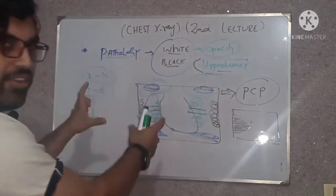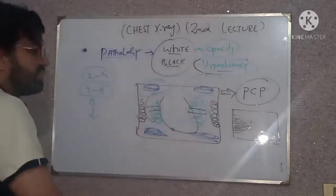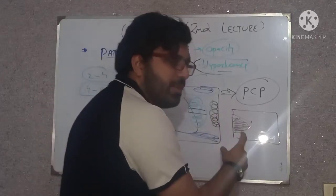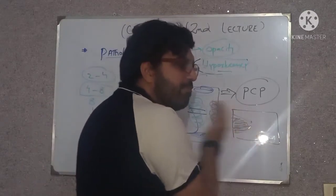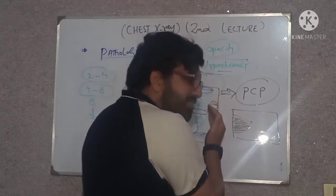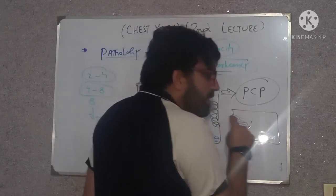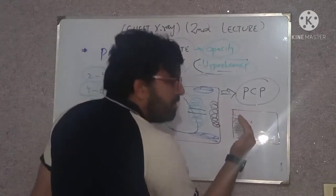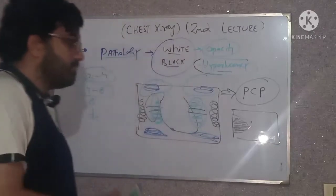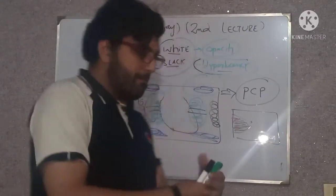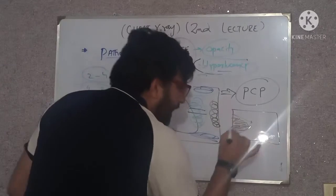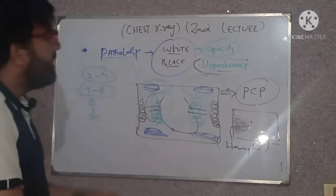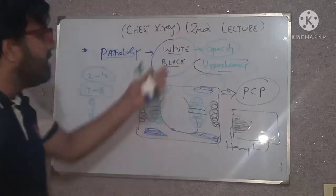Let's say the quality is satisfactory. Then you describe: 'There is a pleural-based opacity on the right side extending from periphery toward the mid zone, sparing the lower zone, the central zone, and the upper zone — forming a wedge shape. Most probably this is Hampton's hump, seen in pulmonary infarction.' Similarly, you can explain other opacities in the same way.